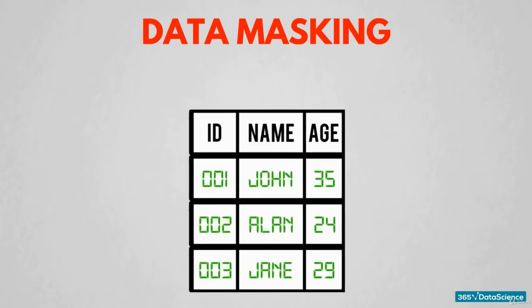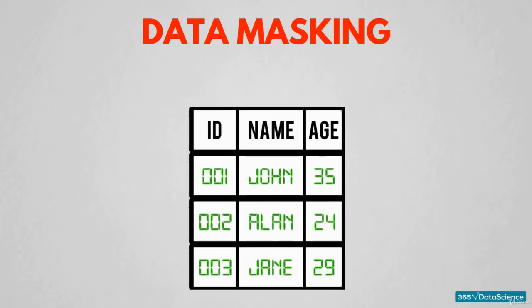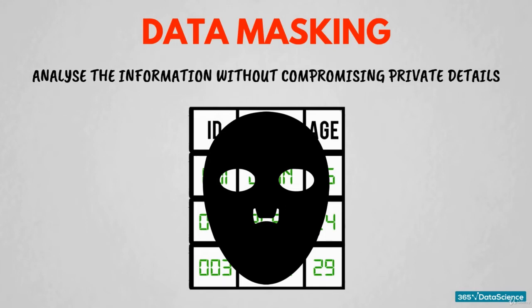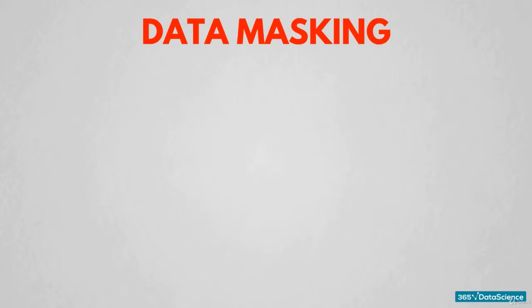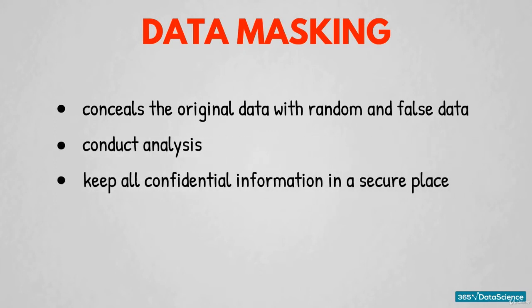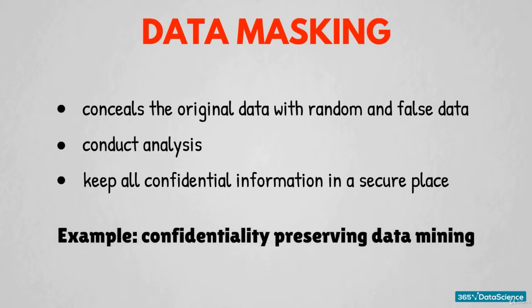Data masking: if you want to maintain a credible business or governmental activity, you must preserve confidential information. However, when personal information is shared online, it doesn't mean that it can't be touched or used for analysis. Instead, you must apply some data masking techniques so you can analyze the information without compromising private details. Like data shuffling, data masking can be quite complex. It conceals the original data with random and false data, allowing you to conduct analysis and keep all confidential information in a secure place. An example of applying data masking to big data is through what we call confidentiality-preserving data mining techniques.